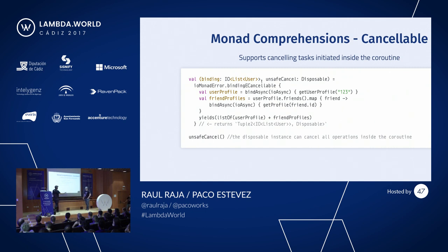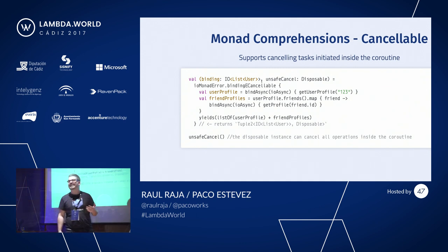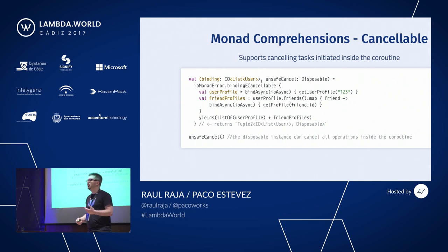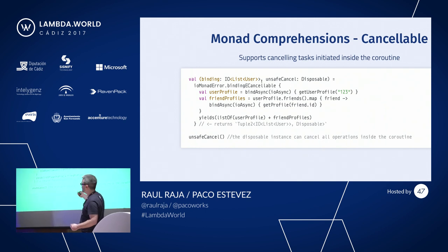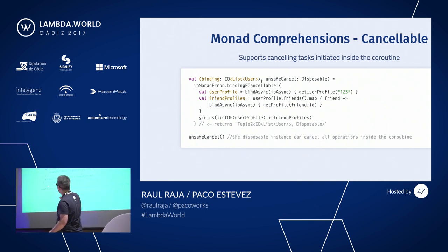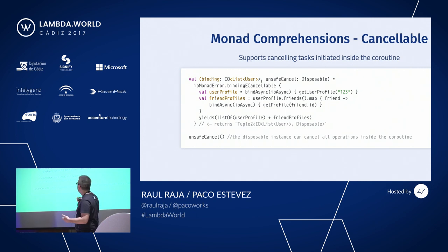For those of you working in mobile development, we understand that in Android the imperative framework requirements and how the UI context has to be retained means you need cancellation for some operations. The way we implemented these comprehensions also allows for arbitrary cancellation at any point of execution. If you use the operator binding cancelable, you're going to get a pair of the actual binding — the operation that is already running — and a disposable, an unsafe cancellation of that operation.